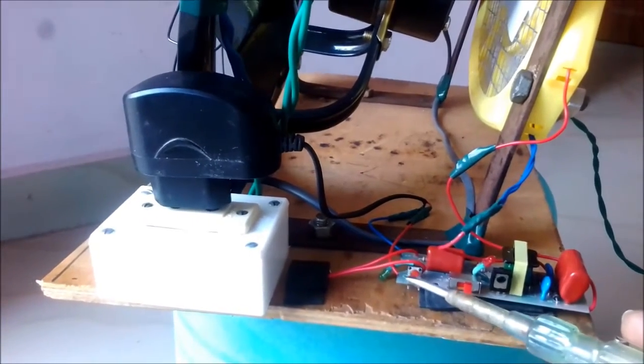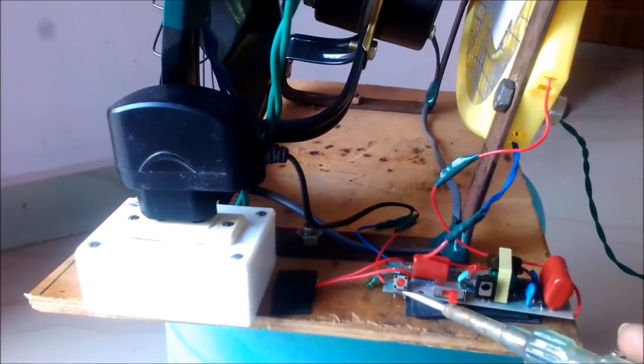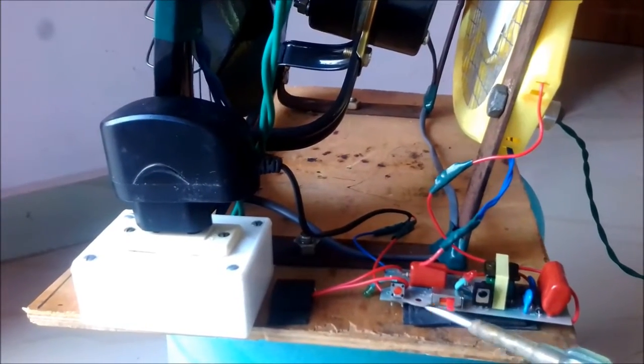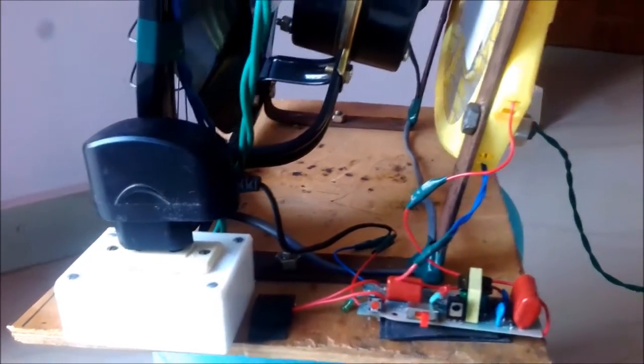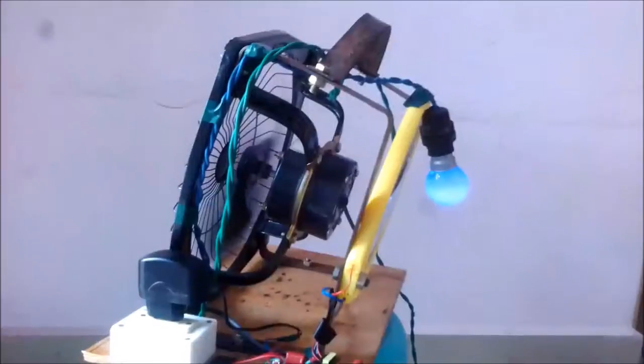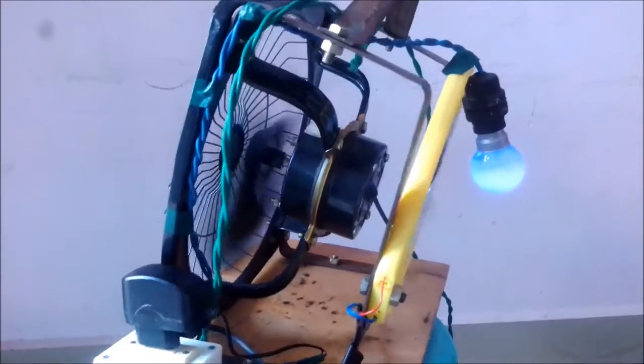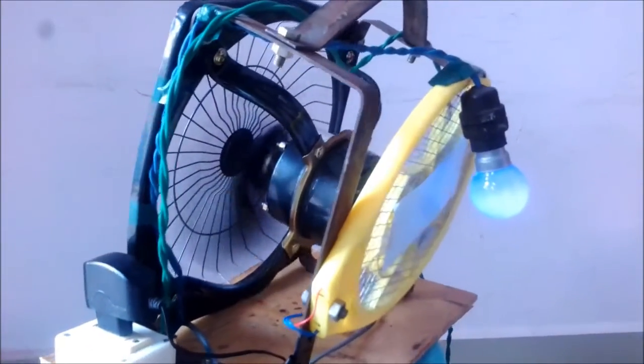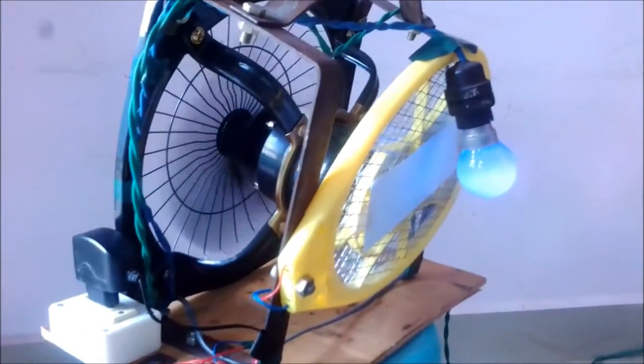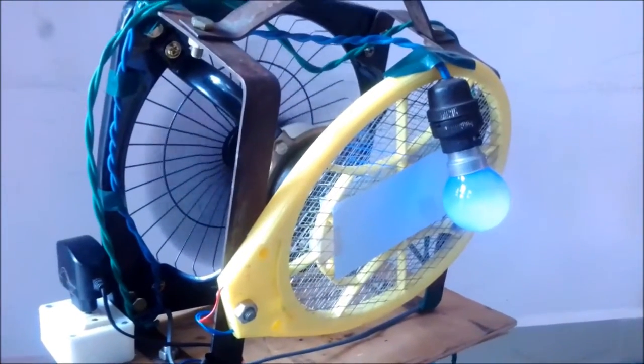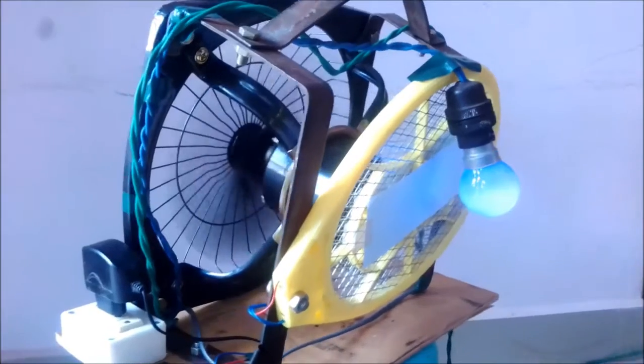Modré alebo zelené svetlo priťahuje komára. Priťahovaný komár sa blíži ku svetlu, rýchlosť ventilátora ťahá komára a komár padá na komár bat. Neustále poháňaný komár bat zabíja komára nepretržite. Teraz spojte všetky tri elektrické prvky jedným káblom a zástrčkou a zapnite ju.